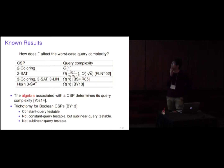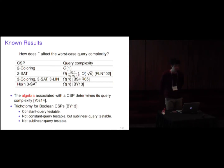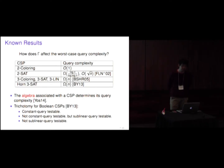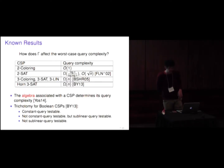There are several known results on how gamma affects the worst-case query complexity. For two-coloring, we can test satisfiability of assignments with constant query complexity. For two-SAT, it is known that we can't do it with a constant number of queries, but we can with a sublinear number of queries. For three-coloring, three-SAT, three-LIN, and Horn-SAT, we need a linear number of queries. It is known that the algebra associated with the CSP determines its query complexity. For Boolean CSPs, a trichotomy is known — a general characterization of constant, sublinear, and non-sublinear query-testable gamma.